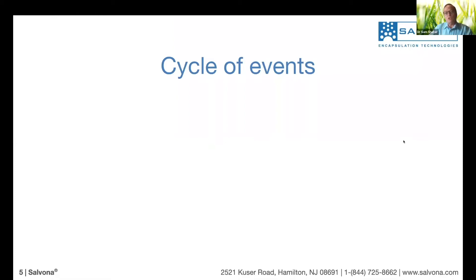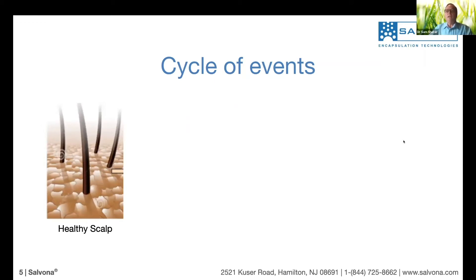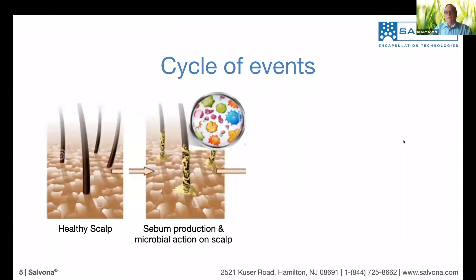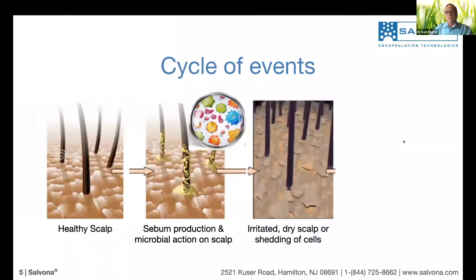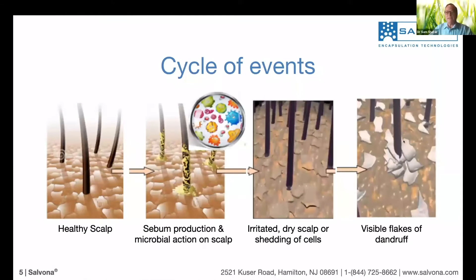Let's understand this from the physiological point of view. In a healthy scalp we have moisturized, hydrated skin with growing hair. Something may happen and we have excess sebum production. The sebum coats the hair — that's why we call it oily hair. The excess sebum on the scalp becomes food for multiple bacteria and fungi, which cause irritation, dry scalp, shedding, and eventually what we see as dandruff.